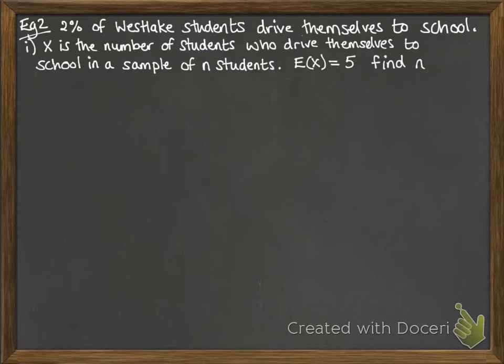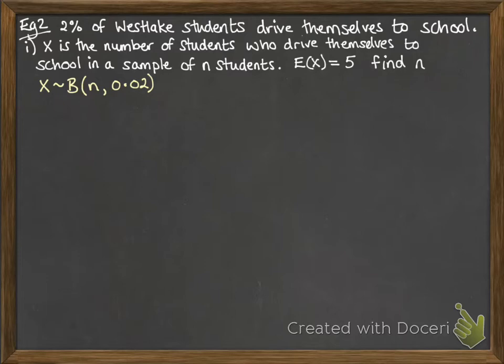Next one: 2% of Westlake students drive themselves to school. X is the number of students who drive themselves to school in a sample of n students, where the expectation of x equals 5. We want to find n. So x follows a binomial distribution with n trials and probability of success 0.02. To work out E(x), you do n times 0.02, and we're told that equals 5.